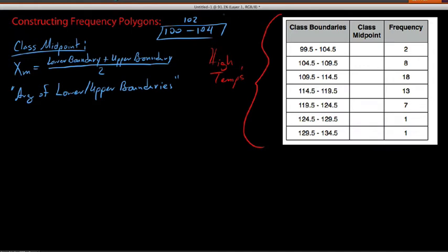So, we'd say 100 plus 104 is 204, and then half of 204 would be 102, and that would be our midpoint.